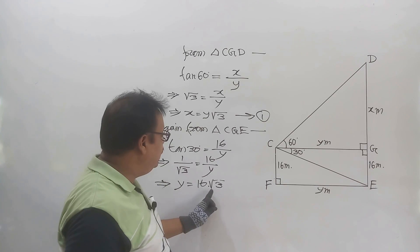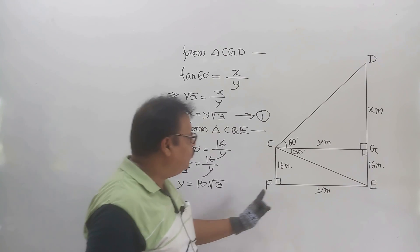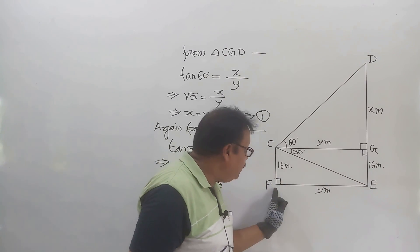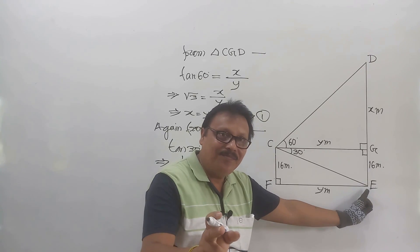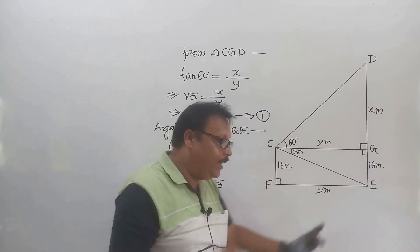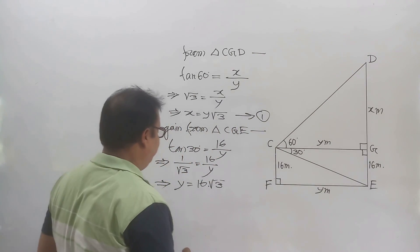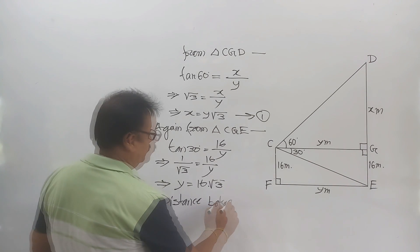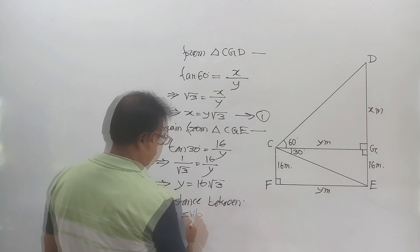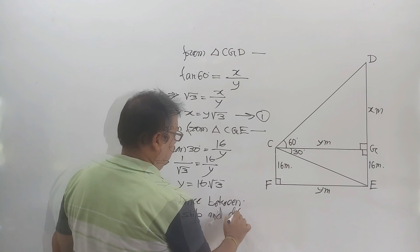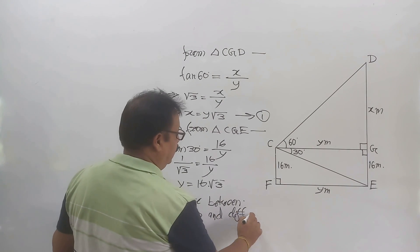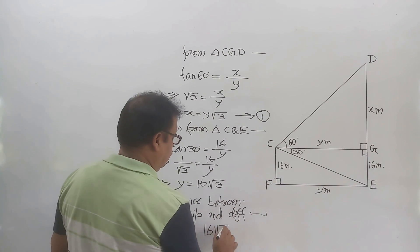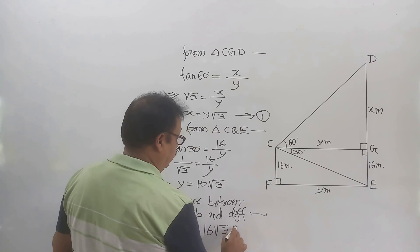Therefore, y equals 16 root 3. The distance between the ship and the cliff is 16 root 3 meters.